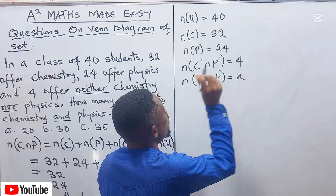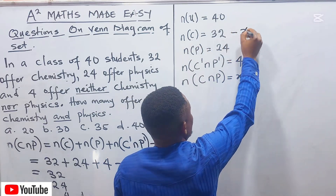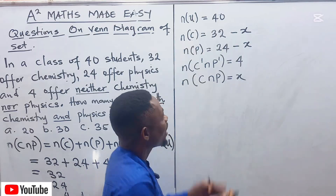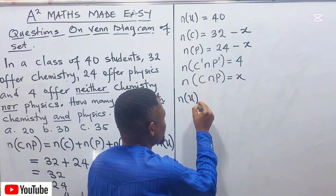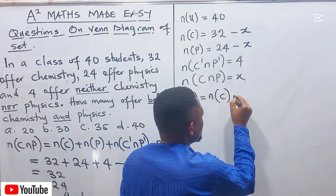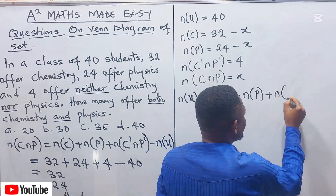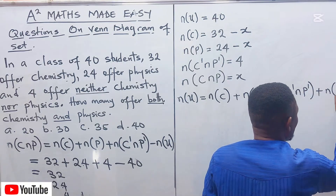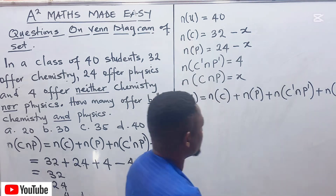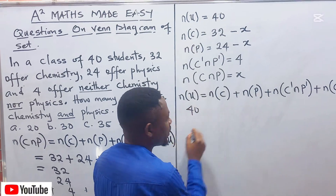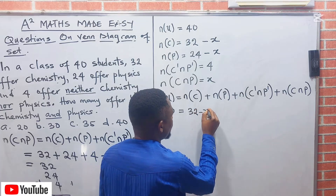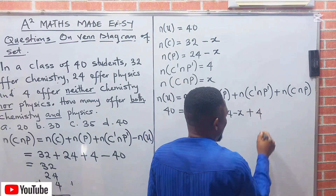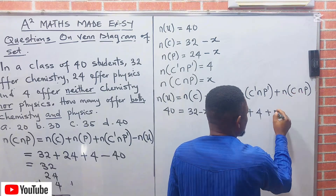Chemistry only is 32 minus X, and physics only is 24 minus X. Not chemistry and not physics is 4. Plus the cardinality of chemistry and physics, which is X. The formula is: the universal set equals chemistry only, plus physics only, plus neither, plus both. So: 40 equals (32 minus X) plus (24 minus X) plus 4 plus X.